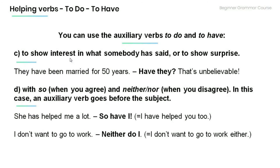Third, to show interest in what somebody has said or to show surprise. For example: 'They have been married for 50 years.' 'Have they? That's unbelievable!' Fourth, with 'so' when you agree, and 'neither' or 'nor' when you disagree — in this case the auxiliary verb goes before the subject. For example: 'She has helped me a lot.' 'So have I,' meaning I have helped you too.